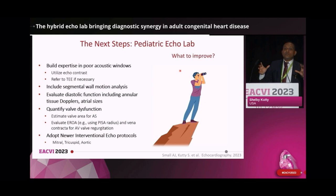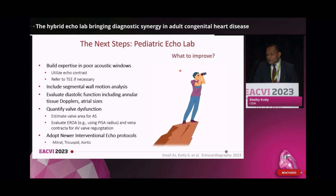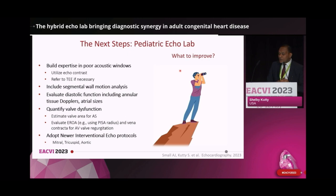For those of us working in a pediatric echo lab, we will need to learn how to tackle poor acoustic windows and to utilize quantification techniques. Facility with echo contrast and transesophageal echo and a lab culture willing to apply these tools will be required. Expertise with segmental wall motion analysis needs to be developed. Quantitative methods like annular tissue Doppler and atrial volumetrics need to be routine and accurate. Similarly, quantitative methods to assess valve dysfunction will need to be incorporated. The scope of echo lab support will need to be broadened to include adoption of technologies and protocols that support structural interventions, which are increasingly performed in adult patients, specifically for mitral, aortic, and tricuspid valve repairs and replacements.